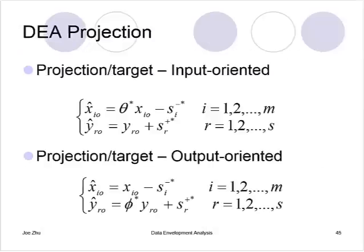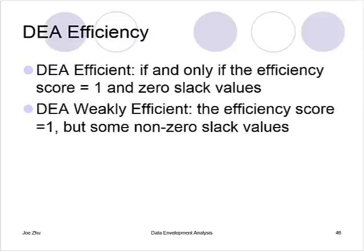So why are we doing that? Well, this is what we call the projection. If you have a DMU that's not efficient, the input efficiency score multiplied by the current input level tells you how much input should be reduced in the same proportion. After that, you can still reduce some of the inputs individually. This is the projection or target for the output-oriented model as well.